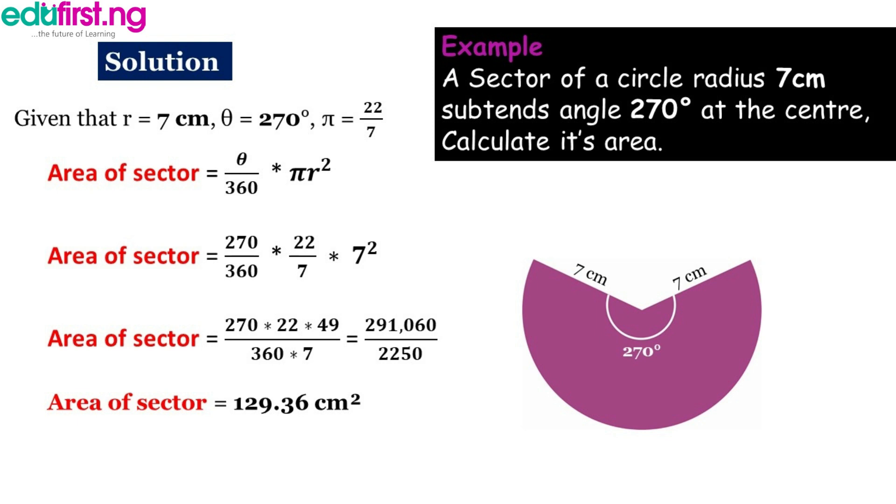So here are the parameters: 7 cm, 270 degrees as theta. So here's a solution to that. Given that r equals 7 cm, theta is 270 degrees, and pi is 22 over 7, area of sector is theta over 360 multiplied by pi r squared. So we simply substitute the values for each of those terms. In place of theta we have 270, in place of pi we have 22 over 7, and in place of r we simply put 7. If you do that math you're going to have 291,060 all divided by 2,250. Punch that on your calculator, what you have is 129.36 cm squared. That's the area of a sector. Very simple, right?